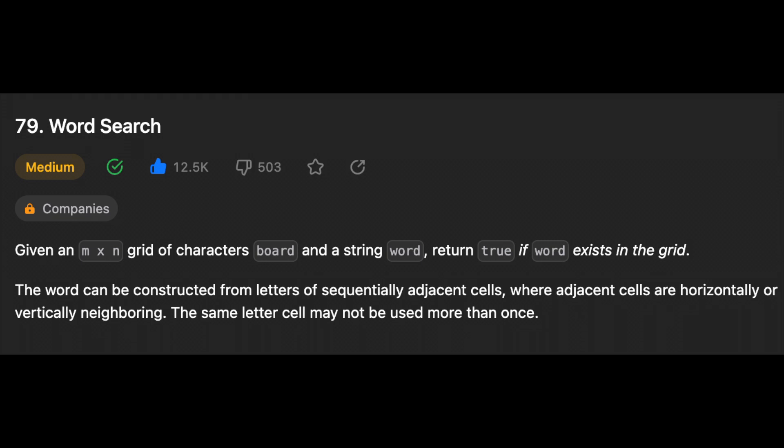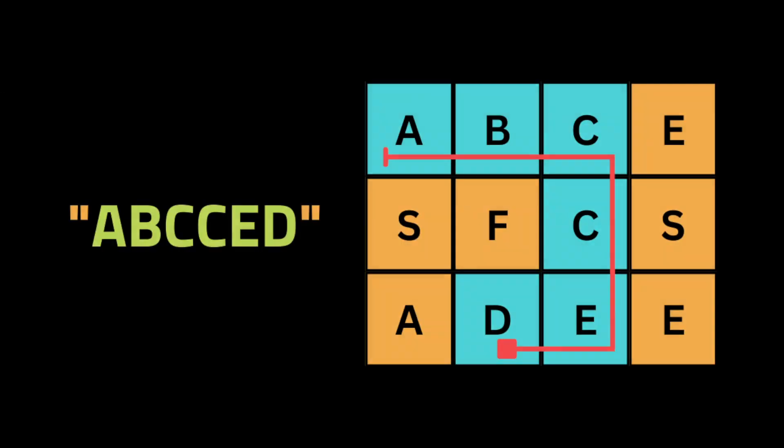Without further ado, let's get started. The problem is that they've given you a matrix of letters and the task is: can you create a word using the letters inside the matrix, respecting one condition — a letter cannot be reused. The word can be formed by combining letters from sequentially consecutive cells, where adjacent cells are those that are horizontally or vertically contiguous.